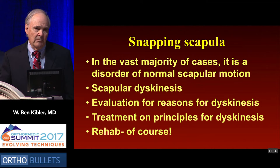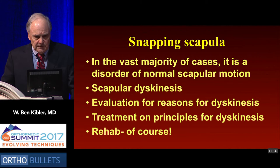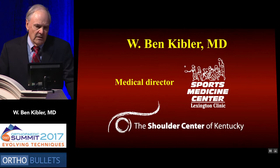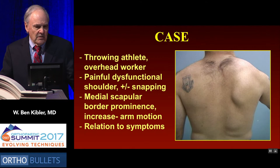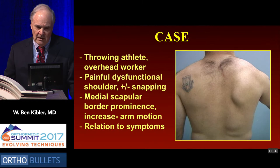Rehab is the number one way to start treatment. I should disclose that a lot of this material is from the recently published book called Disorders of the Scapula and the Role in Shoulder Injury. Here's your case: a throwing athlete or overhead worker with a painful shoulder, plus or minus snapping, medial scapular border prominence that increases with arm motion and hurts right at the superomedial angle. You have to understand why this is related to the symptoms.